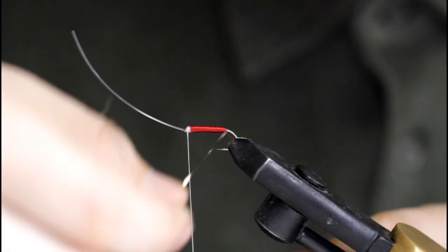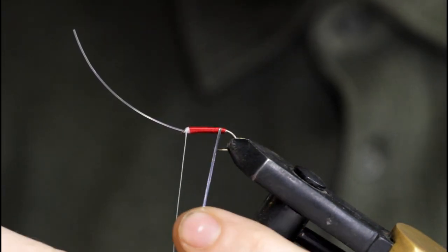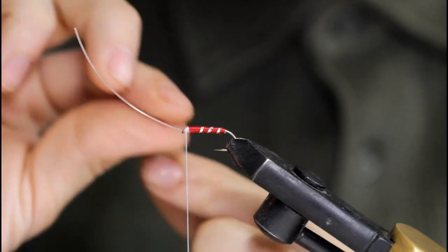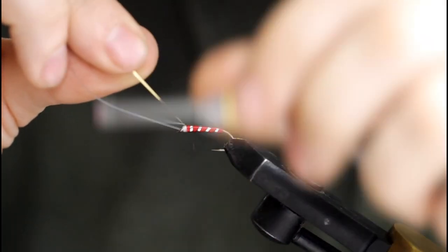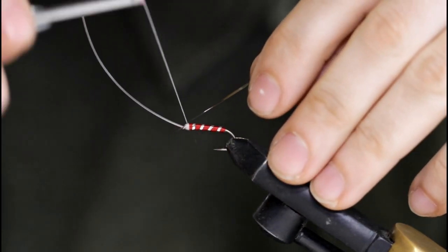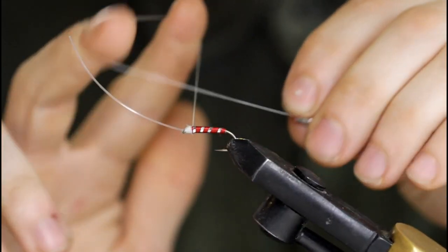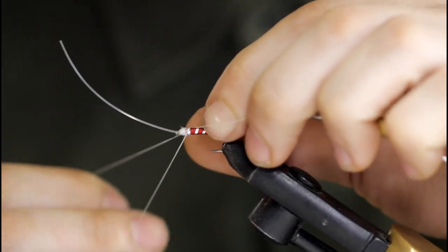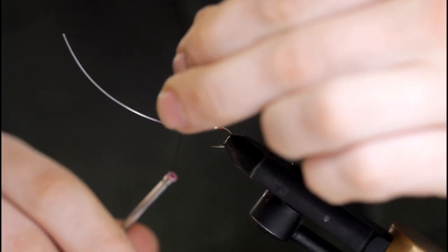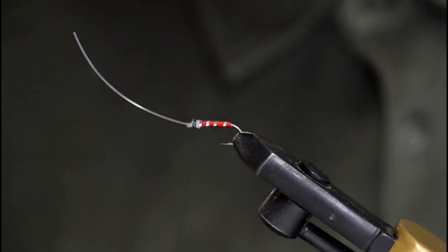And wrap the tinsel forward. All right, now just secure the tinsel and snip it off. Now throw a finish in there. And the thread kind of slipped off on me there a little, but this pattern does call for a black head, so that's okay because I'm going to cover it up with black.